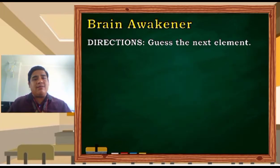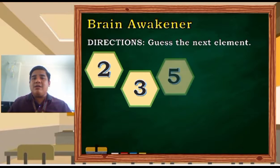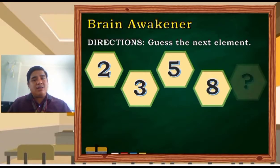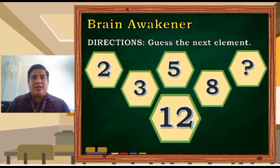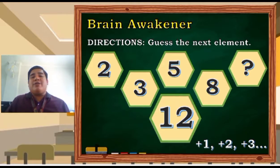What about this? 2, 3, 5, 8, missing. Can you guess the next element? Oh, I guess it is a very tricky question. So the next element here is 12. How did we get 12? So the second element is obtained by adding 1 to the first element. The third element is obtained by adding 2 to the second element. The fourth element is obtained by adding 3 to the preceding element. So our fifth element will be obtained by adding 4 to the fourth element. Plus 1, plus 2, plus 3, plus 4, and so on and so forth. So much for that. Let us proceed to our discussion.